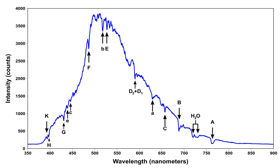Spectral lines also depend on the physical conditions of the gas, so they are widely used to determine the chemical composition of stars and other celestial bodies that cannot be analyzed by other means, as well as their physical conditions. Mechanisms other than atom-photon interaction can produce spectral lines. Depending on the exact physical interaction, the frequency of the involved photons will vary widely, and lines can be observed across the electromagnetic spectrum, from radio waves to gamma rays.